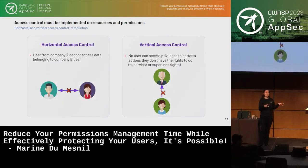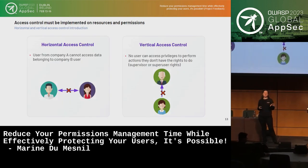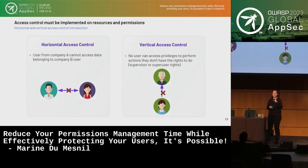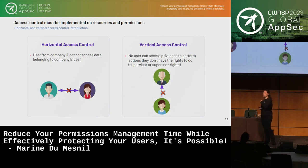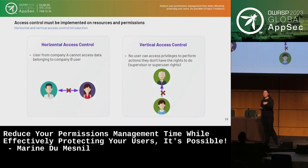Let's talk about theory first. We have two kinds of access control. First, horizontal access control: we don't want people from company A to access the documents or data from company B. And vertical access control: in my specific case, I don't want back-office users being able to delete or publish documents, because only certified people can do this. We don't want privilege escalation.